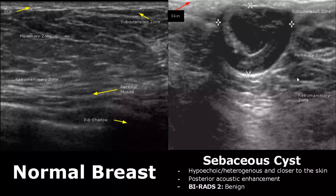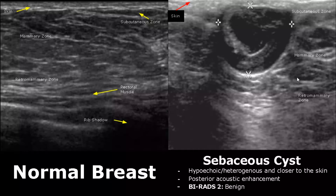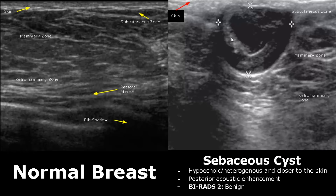A sebaceous cyst is a complex cyst present closer to the skin. You can see it is present just below the skin and even involves the skin, so this superficial location can help in diagnosing a sebaceous cyst. It is classified as BI-RADS 2.